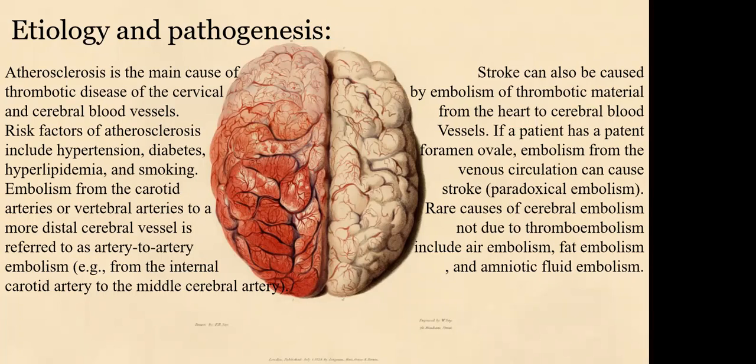Stroke can also be caused by embolism of thrombotic material from the heart to cerebral blood vessels. If a patient has a patent foramen ovale — a flap in the heart's wall — blood can stagnate in there long enough to clot. Embolism from the venous circulation can cause a stroke via paradoxical embolism.